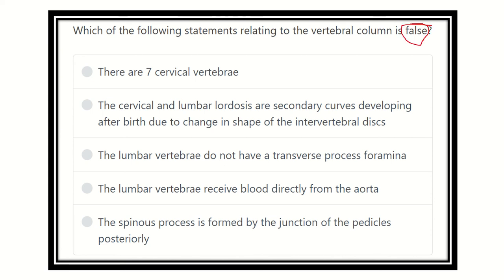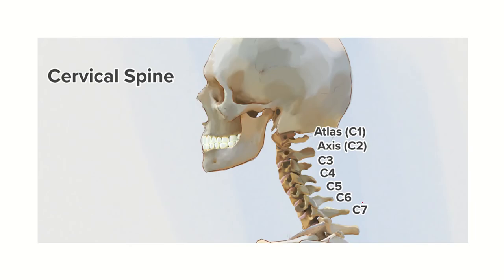We need to find out the false option regarding the vertebral column. Looking at this picture, we can see the cervical region. Cervical one is the atlas, which is the first cervical vertebra. The axis is the second cervical vertebra. Then cervical three, four, five, six, and seven — so there are seven cervical vertebrae present in the human.